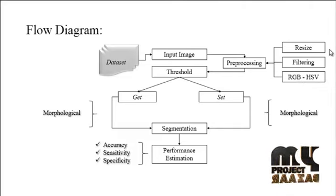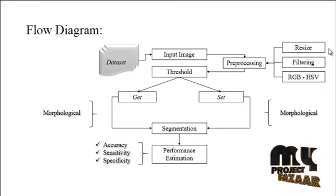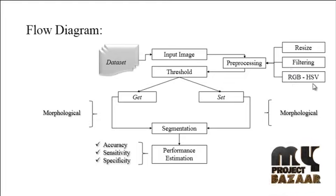In the first step, resize is carried out to scale the image into two categories: upscaling and downscaling. If the input image ratio is greater than the resized ratio, it will be downscaled; otherwise, it will be upscaled. After image resize, filtering is carried out to reduce the noise from the image using a filter.